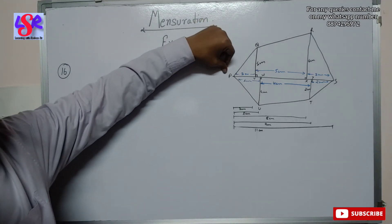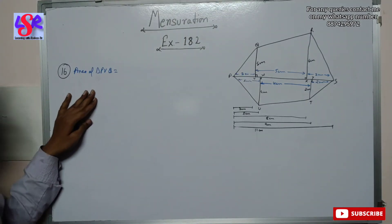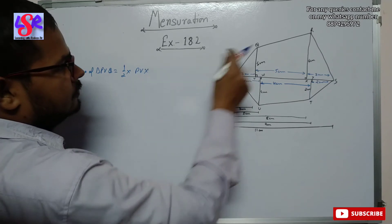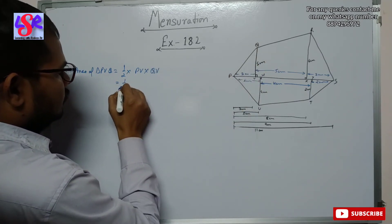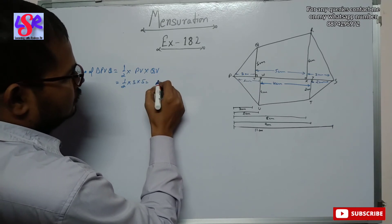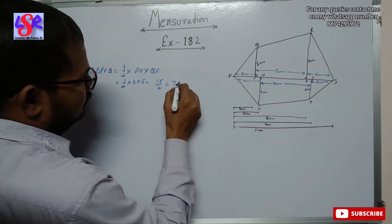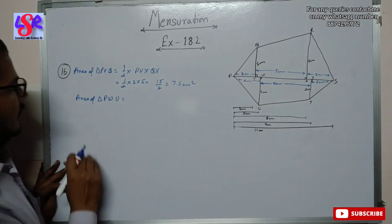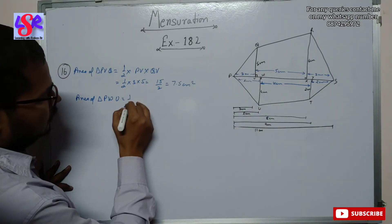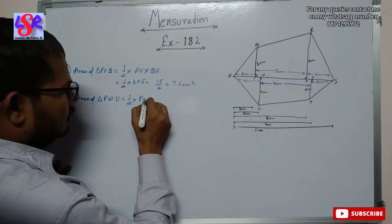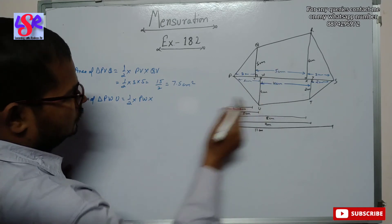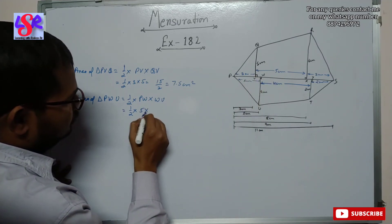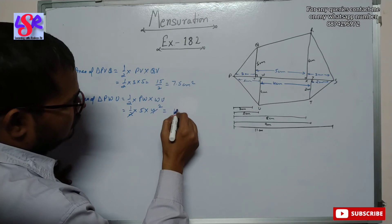Now we calculate the area of triangle PVQ as 1/2 into base PV into height QV, which is 1/2 into 3 into 5 equals 15/2 equals 7.5 square centimeters. Then the area of triangle PWU equals 1/2 into PW into WU equals 1/2 into 5 into 4. The 2 cancels to give 10 square centimeters.